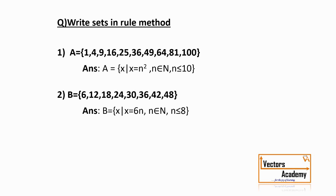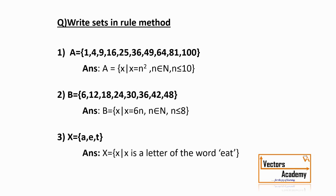Let's look at another question. Set X contains the letters A, E, and T. That's a very easy one to represent. Set X = {x | x is a letter of the word EAT}. The set X actually contains all the letters of the word EAT. Representing a set in the listing form is quite easy, whereas representing it in the rule method will require some practice.